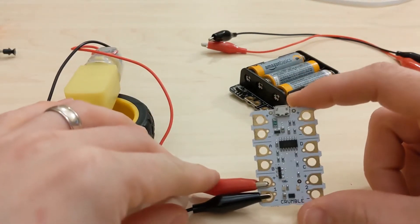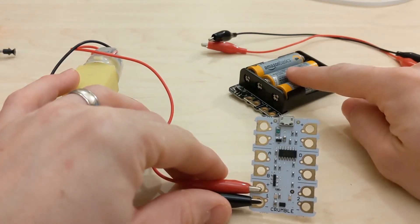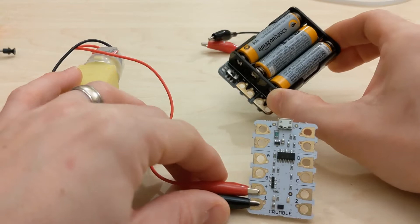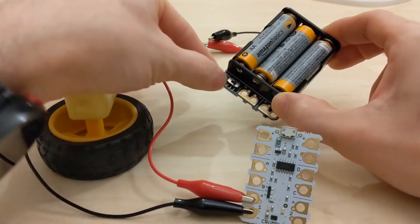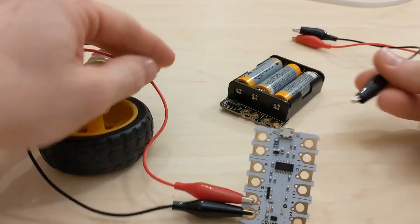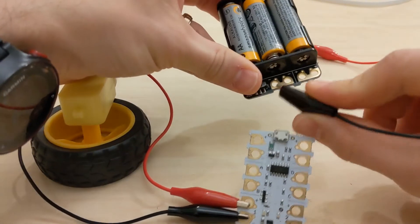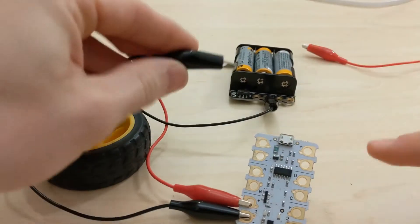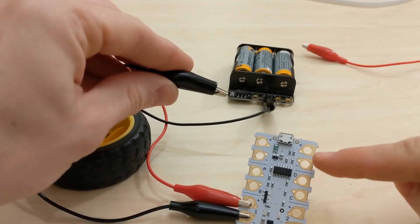Now because motors are very power hungry, you're also going to need an additional power source which can either be a USB power bank or one of the battery packs you can get off the Redfern website. For that you're going to need a couple of additional wires. You've got two negative terminals, so one will go on to the negative. At the top of the crumble board you've got two additional power inputs here.